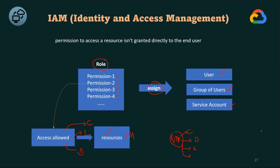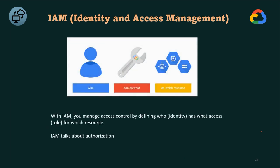IAM deals with: who can do what on which resources. 'Who' refers to the type of user — a single user or a group of users. 'Can do' refers to the action they want to perform. With IAM, you manage access control by defining who has what access for which resources.